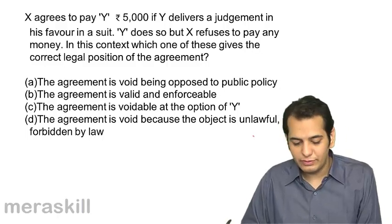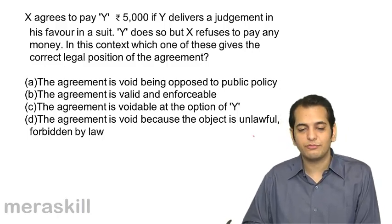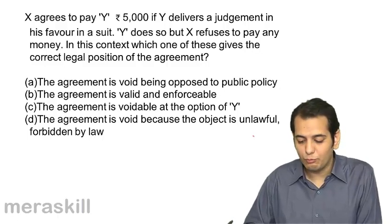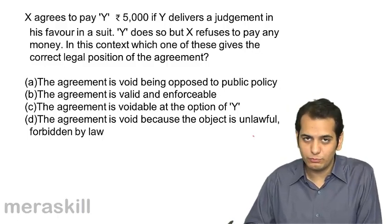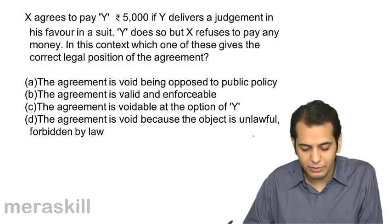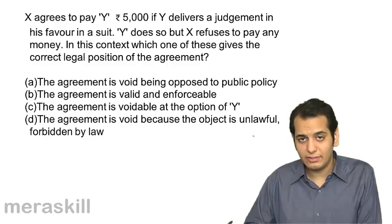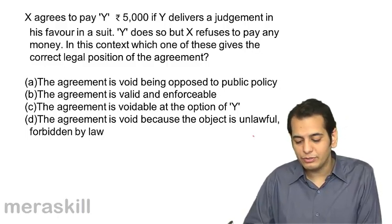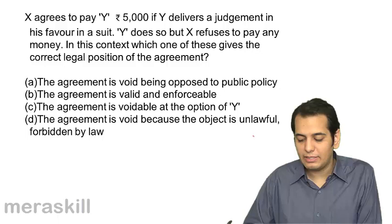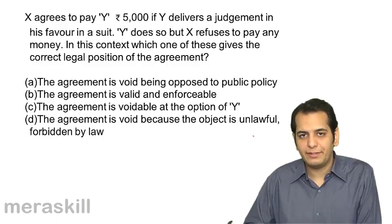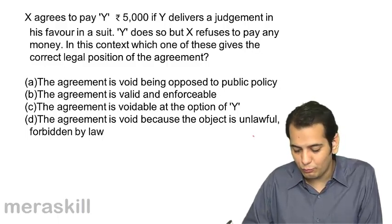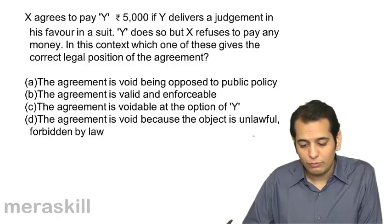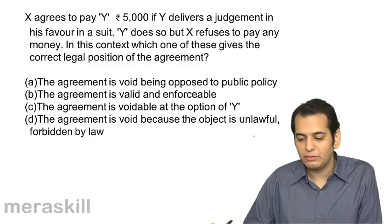In this context, which one of these gives the correct legal position of the agreement? A. The agreement is void being opposed to public policy. B. The agreement is valid and enforceable. C. The agreement is voidable at the option of Y. D. The agreement is void because the object is unlawful or forbidden by law.